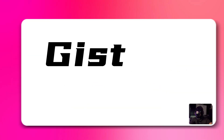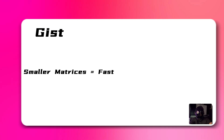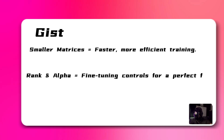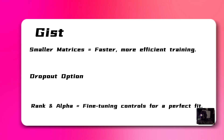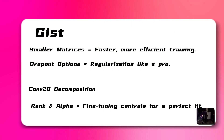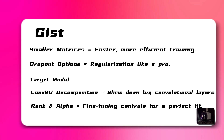Here's the gist: smaller matrices equals faster, more efficient training. Rank and alpha equals fine-tuning controls for a perfect fit. Dropout options equals regularization like a pro. CONV2D decomposition equals slims down big convolutional layers. Target modules equals pick exactly what you want to fine-tune.